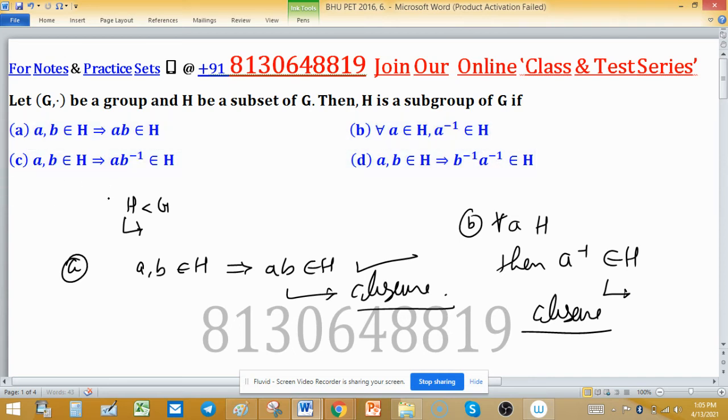Option C is correct and we know that option C is the one-step test for subgroup.